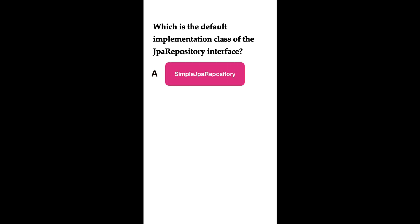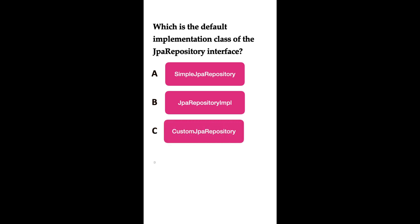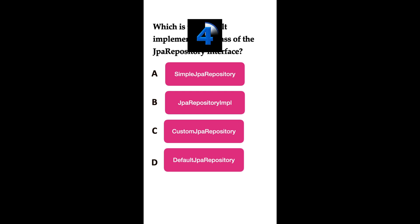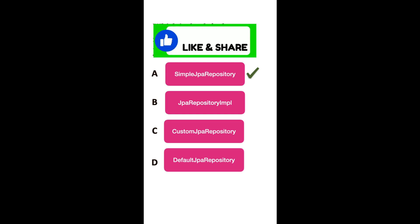What is the default implementation class of the JpaRepository interface? Option A: SimpleJpaRepository. Option B: JpaRepositoryImpl. Option C: CustomJpaRepository. Option D: DefaultJpaRepository. The correct answer is SimpleJpaRepository. The SimpleJpaRepository class is the default implementation of the JpaRepository interface in Spring Data JPA, provided by the Spring Data JPA framework. It serves as a generic repository implementation for performing common CRUD operations and other database operations.